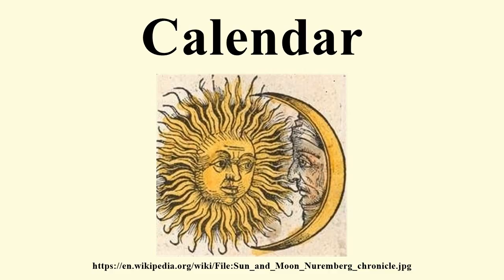This includes the calendar of the Persian Empire, which in turn gave rise to the Zoroastrian calendar as well as the Hebrew calendar. A great number of Hellenic calendars developed in classical Greece, and with the Hellenistic period also influenced calendars outside of the immediate sphere of Greek influence, giving rise to the various Hindu calendars as well as to the ancient Roman calendar. Calendars in antiquity were lunisolar, depending on the introduction of intercalary months to align the solar and the lunar years. This was mostly based on observation, but there may have been early attempts to model the pattern of intercalation algorithmically, as evidenced in the fragmentary 2nd-century Coligny calendar.